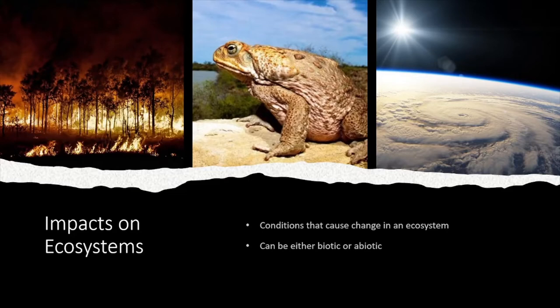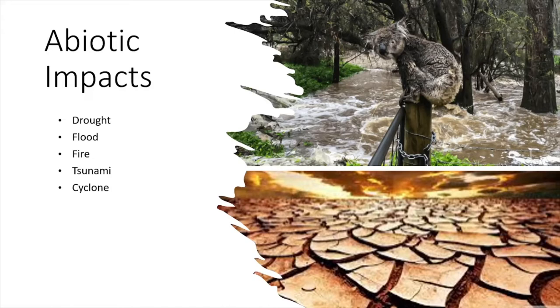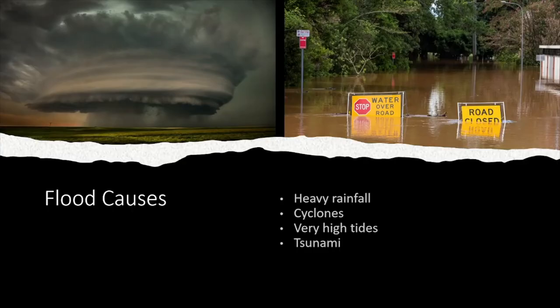Impacts on ecosystems are things that can cause a change in an ecosystem, and they can be biotic or abiotic. Abiotic impacts include things like drought, flood, fire, tsunami, and cyclones.